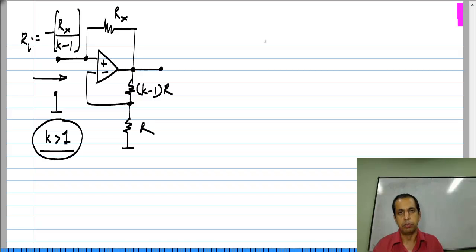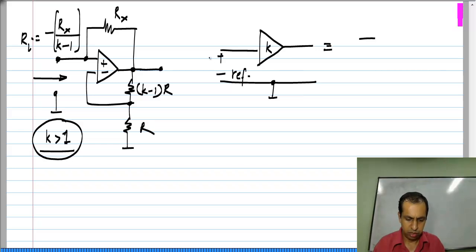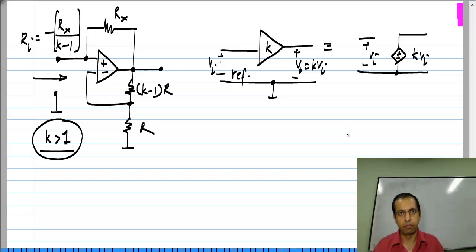This is quite easy and it turns out this is a specific case of what is known as Miller effect. If you have an amplifier of gain K, let us say ground is the reference terminal and this is V i, this is V naught equals K V i. This is nothing but a voltage control voltage source of gain K. So if this is V i, this will be K times V i.